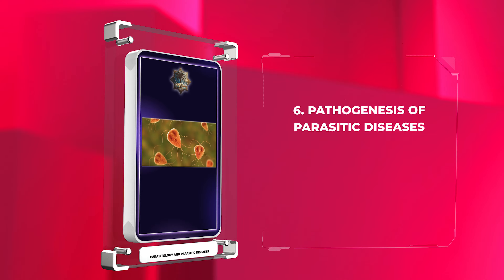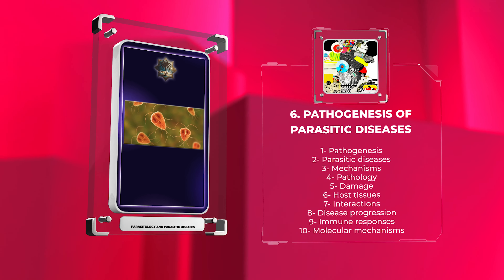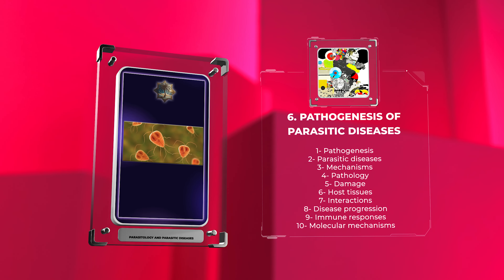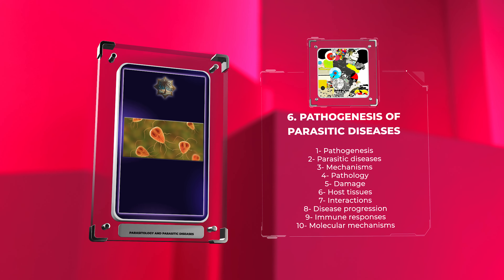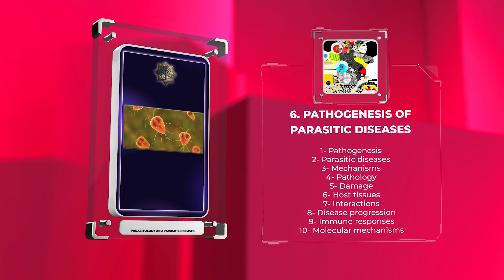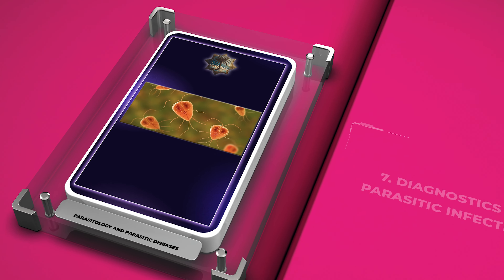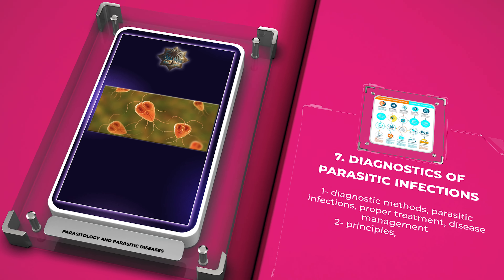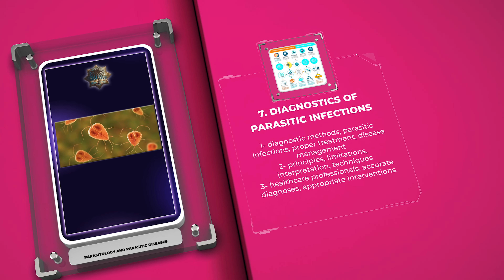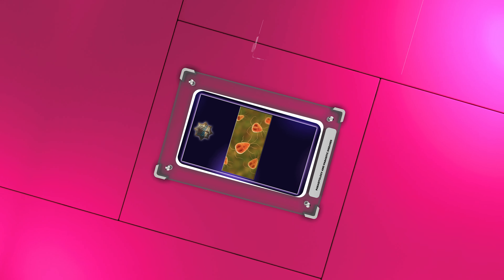Pathogenesis of parasitic diseases. Parasites have evolved sophisticated mechanisms to cause pathology and damage host tissues. In this topic, we will investigate the intricate host-parasite interactions that contribute to disease progression. We will explore the immune responses triggered by parasites and the molecular mechanisms underlying their pathogenicity. These diagnostic methods play a crucial role in identifying parasitic infections, allowing for proper treatment and disease management. By understanding the principles, limitations, and interpretation of these techniques, healthcare professionals can make accurate diagnoses and provide appropriate interventions.